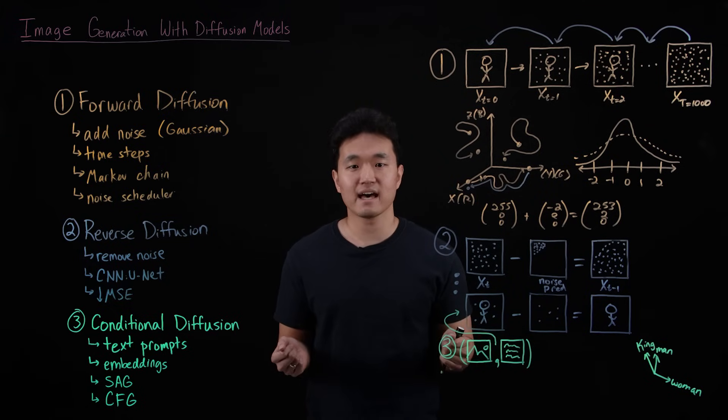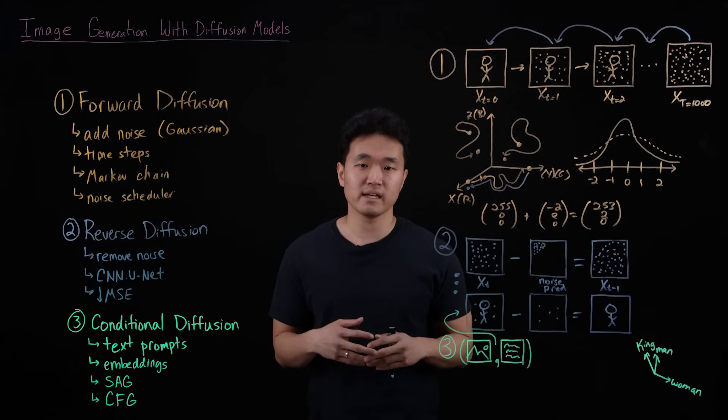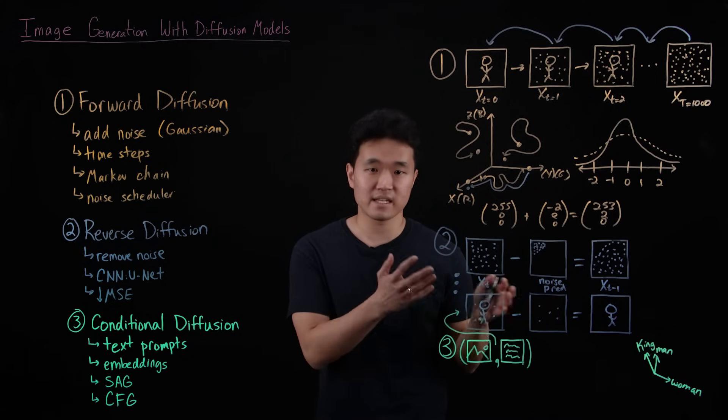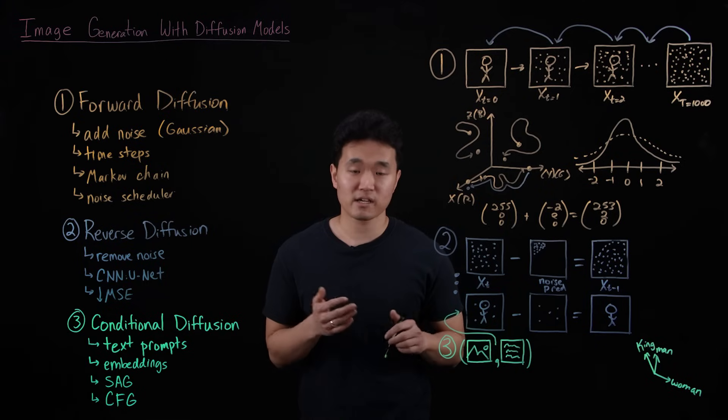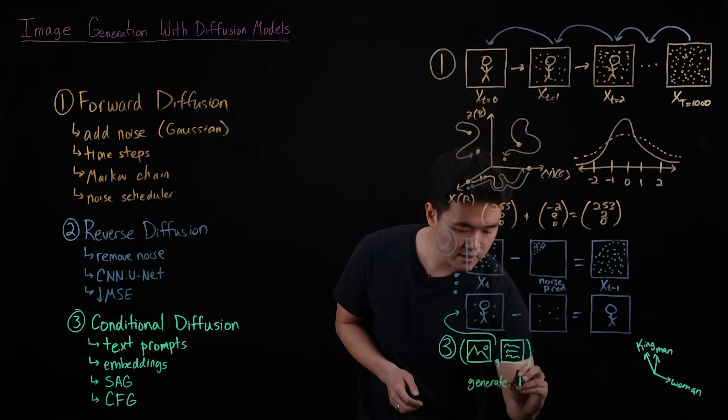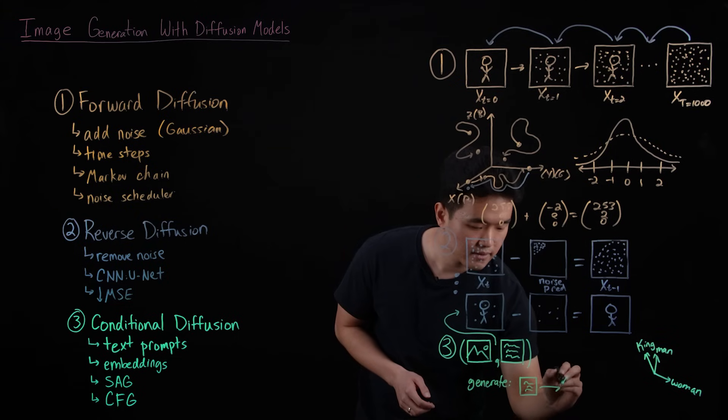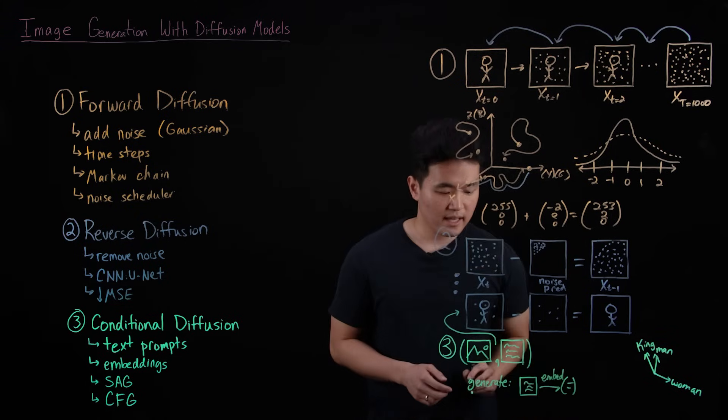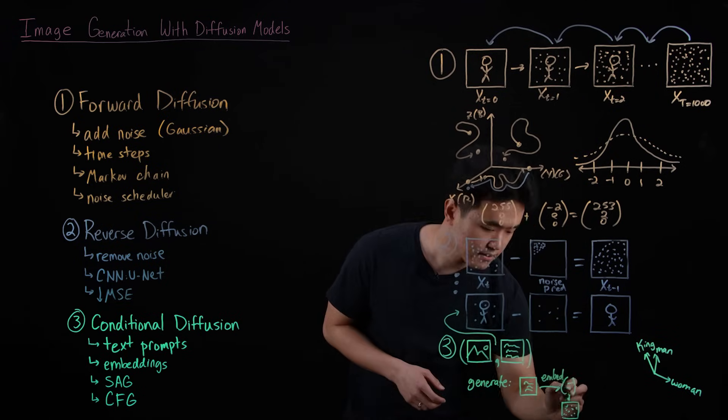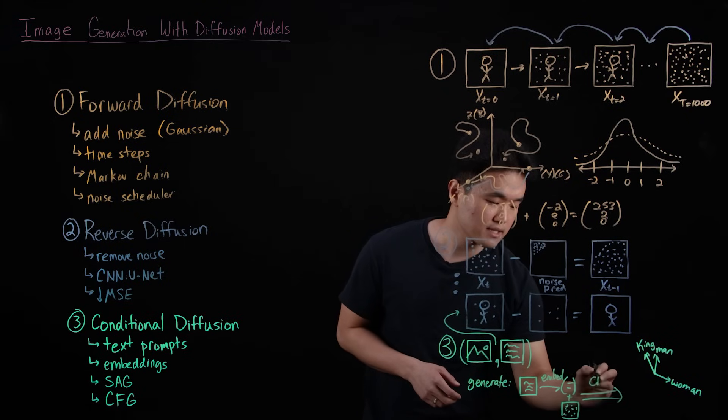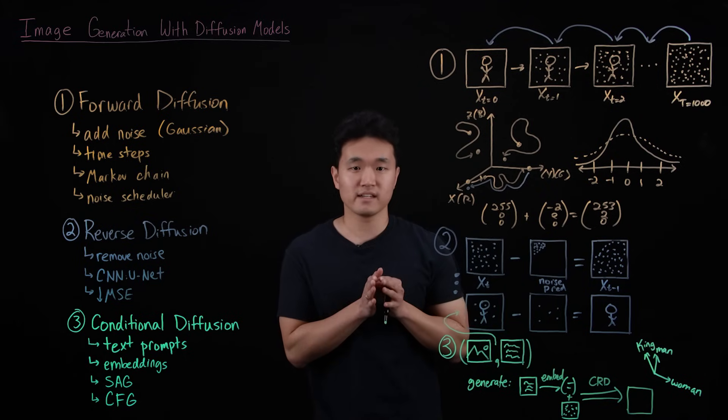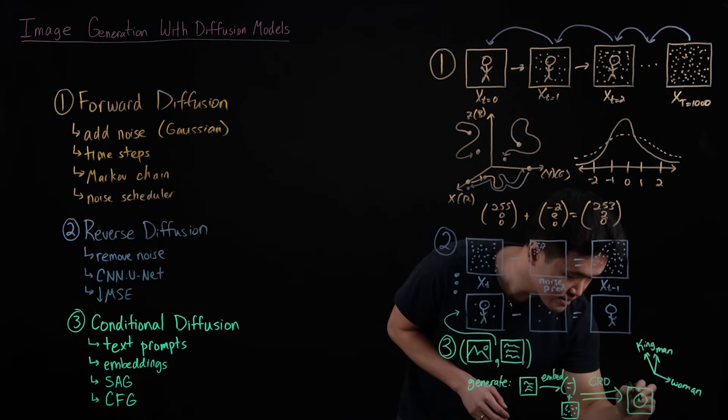So putting this all together, this means that the model is able to learn the relationship between the meaning of words and how they correlate with certain denoising sequences that gradually reveal different features and shapes and edges in the picture. So once this process is learned, the model can be used to generate a completely new image. So first, the user's text description has to be embedded. Then the model starts with an image of completely random noise. And it uses this text embedding along with the conditional reverse diffusion process it learned during training to remove noise in the image in structured patterns, kind of like removing fog from the image until a new image has been generated.